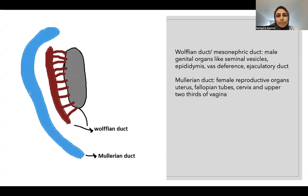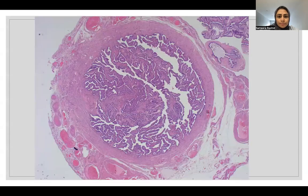Based on the genetic makeup of the embryo and the preferred sex, one system grows fully and the other involutes.